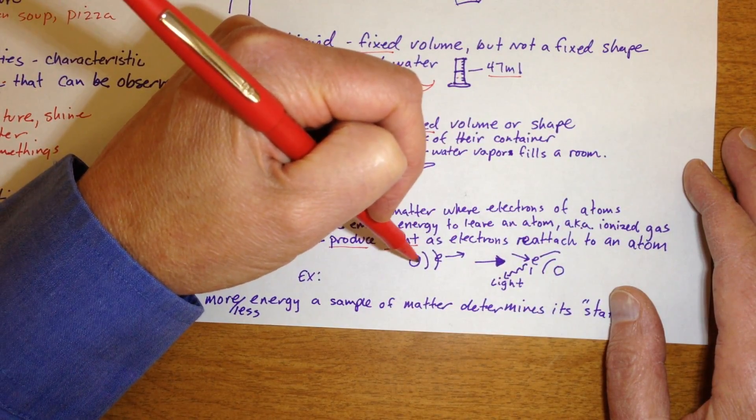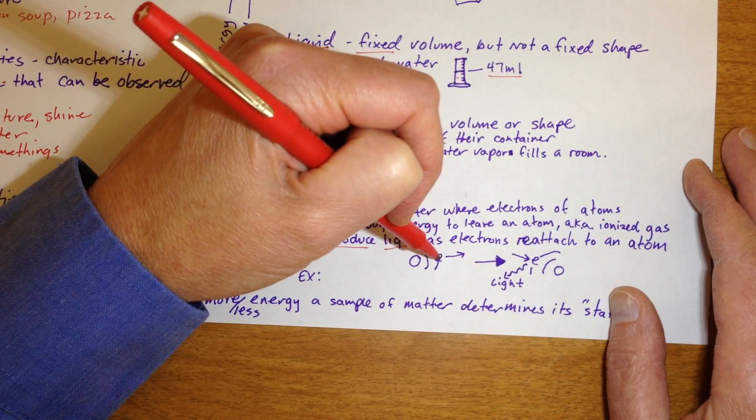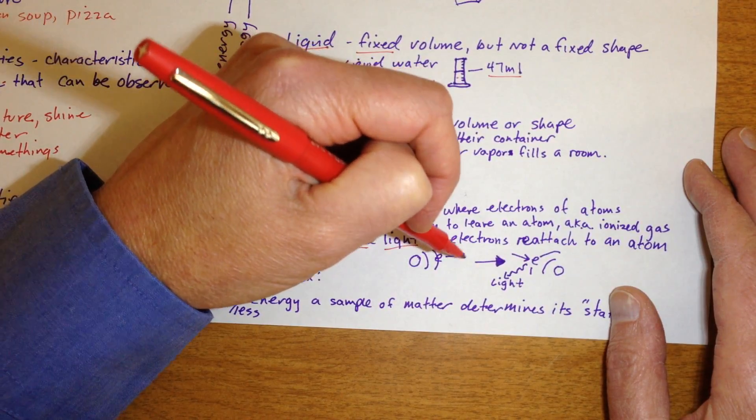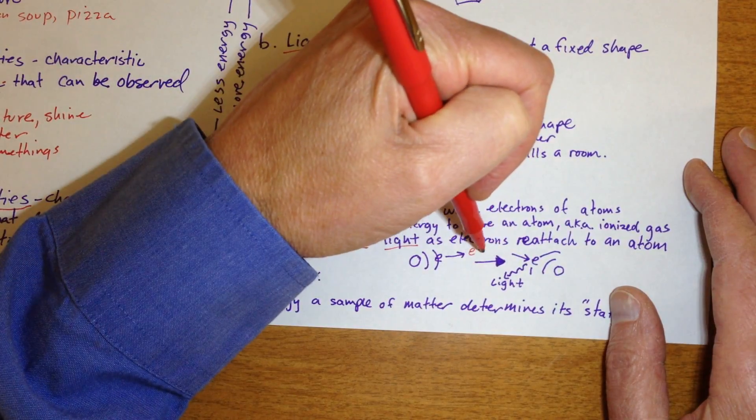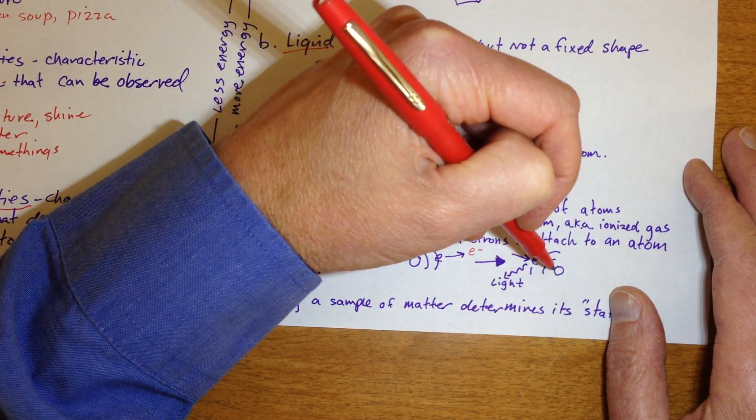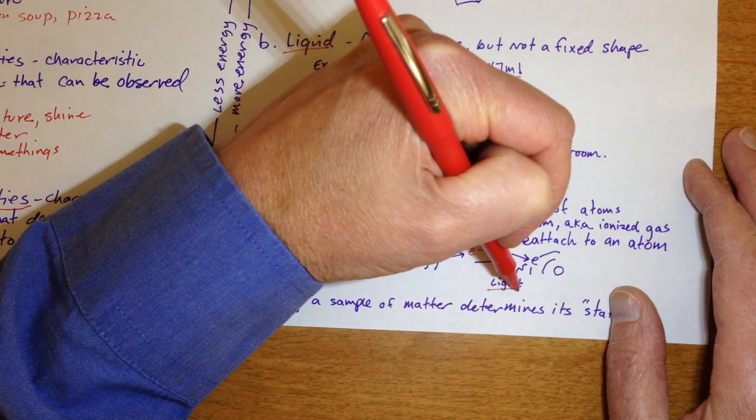So here we have a simple drawing of a nucleus, an atom, a couple of orbitals here. The electron leaves at this point when the electron's gone. I guess this would be part of a plasma. The electron usually will cool back down and reattach to an atom. And when it does that, it actually releases light.